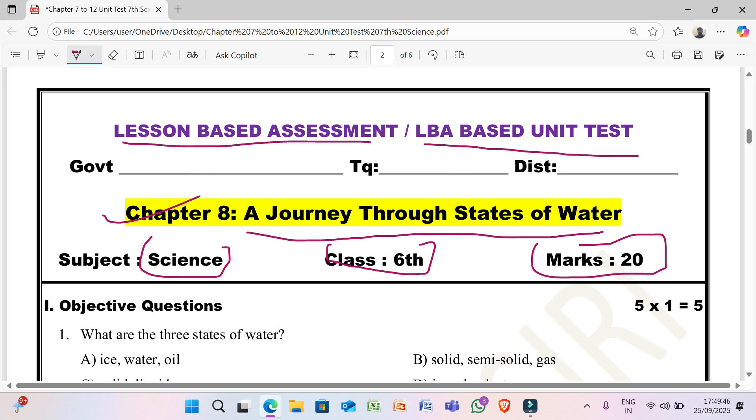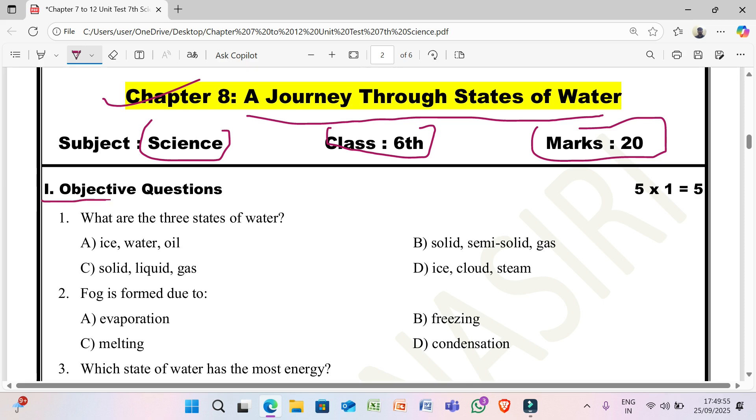This is second semester chapters, second chapter. Second semester chapters are made a LBA based unit test. First question: objective questions, 5 into 1 is 5 marks.